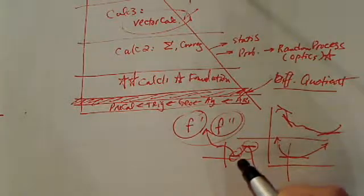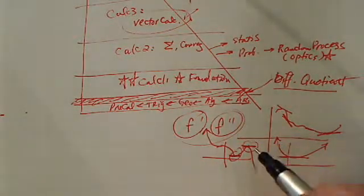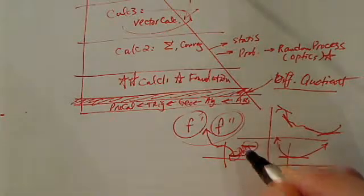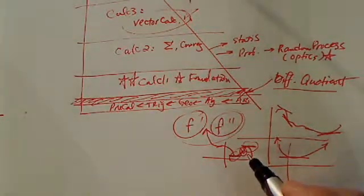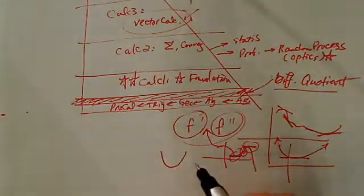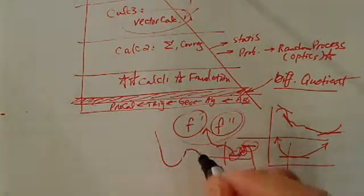For example, the first derivative gives you where the local maximum and local minimum is. Second derivative gives you where this fancy term called an inflection point is. That's when a curve moves concave up to concave down.